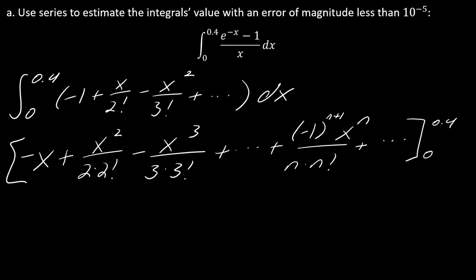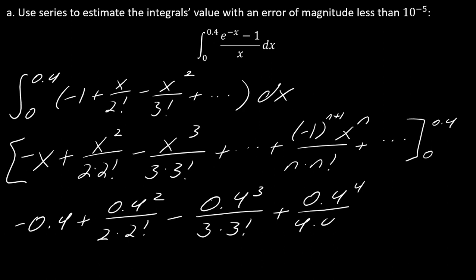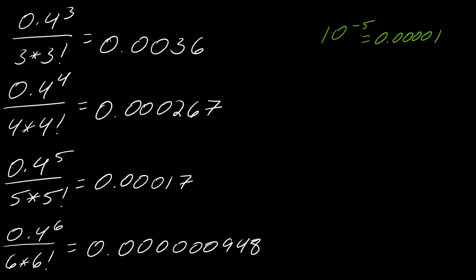The real question is, where do I stop with this? To get your error of magnitude within this amount actually requires you to understand what's going on with each of these terms. I actually calculated out a couple of terms. Here I've got 0.4 to the 3 over 3 times 3 factorial, 0.4 to the 4th over 4 times 4 factorial.